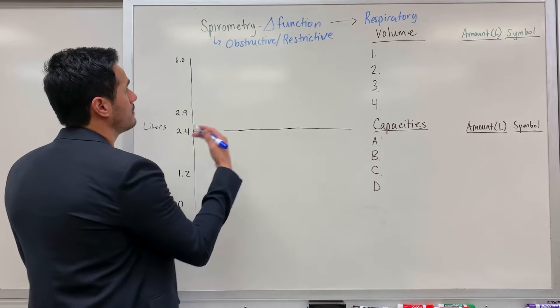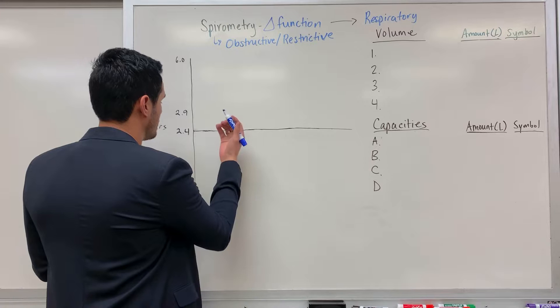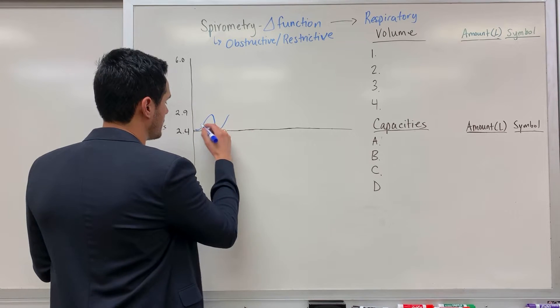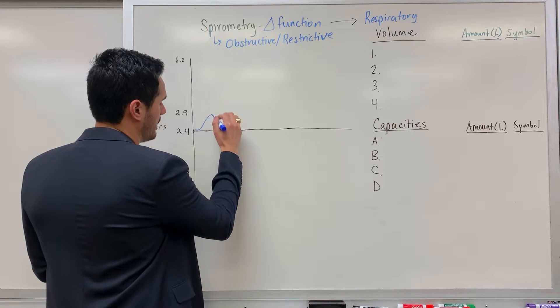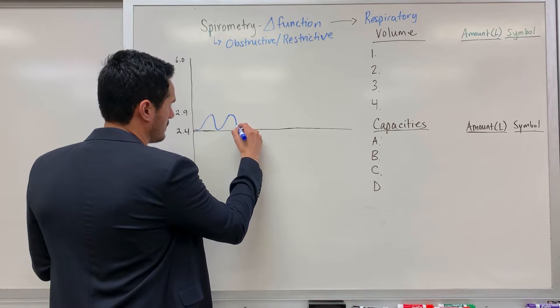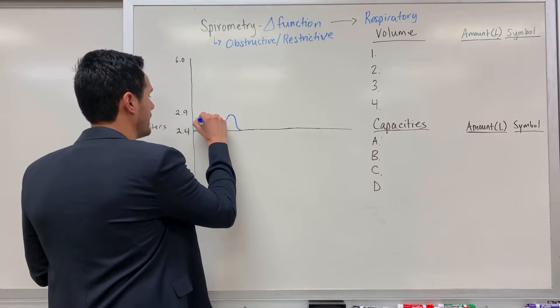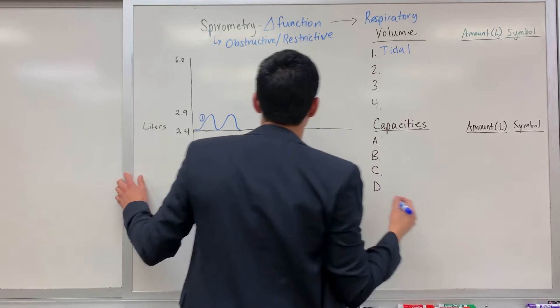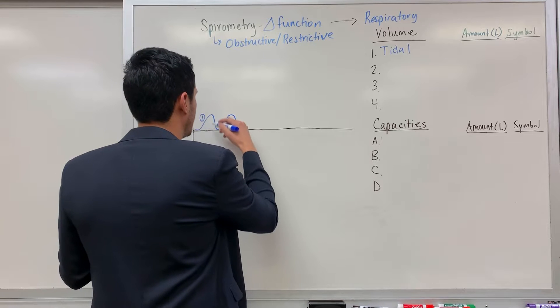Okay, so using a spirometer when someone is normally breathing, there's air going into the lungs or within the alveoli and also air leaving whenever I exhale. So this little wave here, this is number one, this is what's known as the tidal volume. The tidal volume is when you normally inhale, normally exhale.